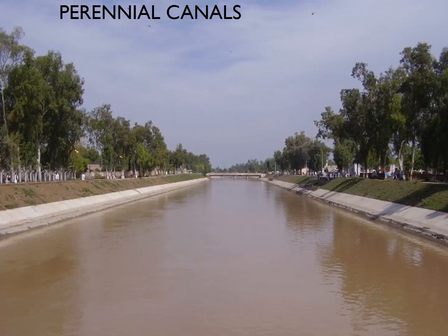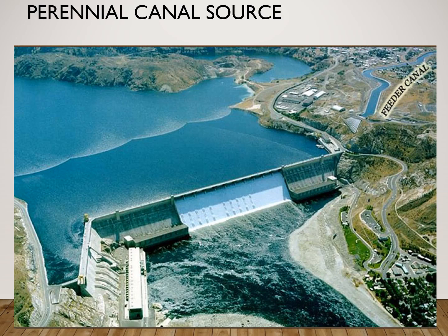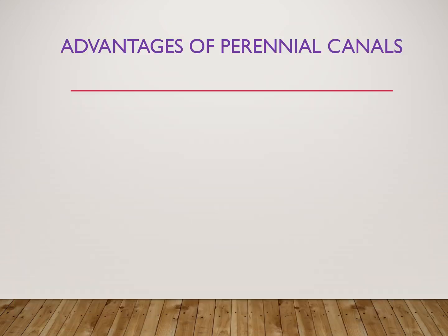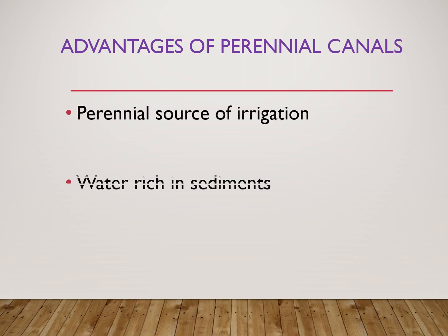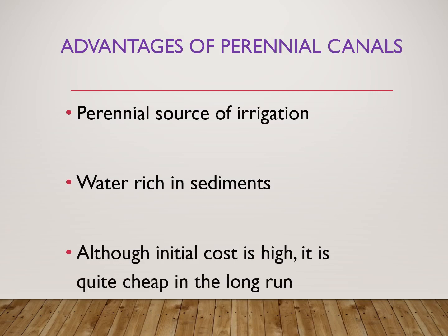Perennial canals are one of the ways in which modern irrigation is practised. These canals are very well made and can transport large amounts of water from rivers to the areas where they are needed throughout the year. This is how perennial canals are generally made: there is a feeder canal which takes water from the reservoir to the areas where it is required. Advantages of perennial canals: they are a perennial source of irrigation with water throughout the year, and the water is rich in sediments which makes the soil fertile.